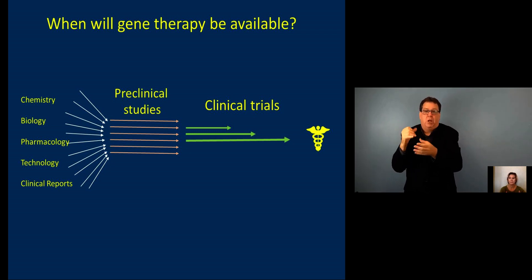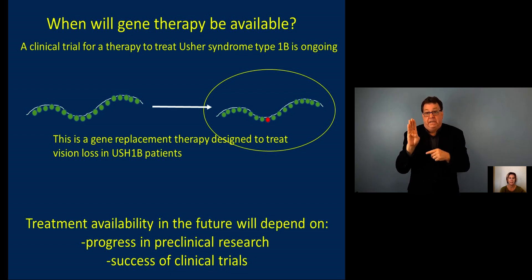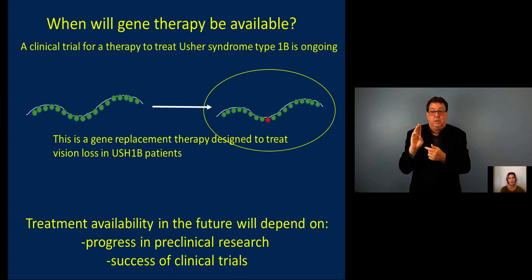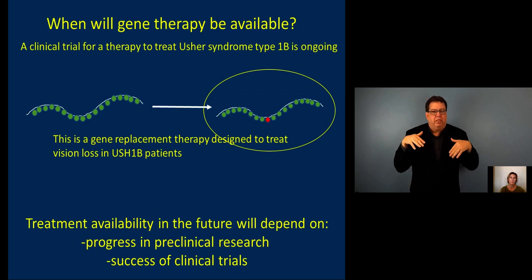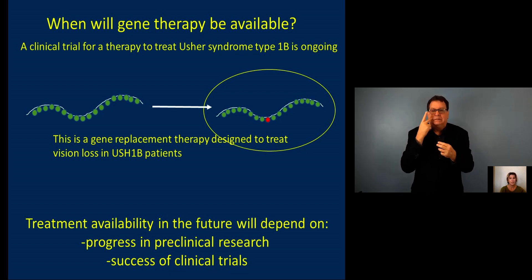Regarding Usher syndrome, there's currently one clinical trial underway — a gene therapy to treat Usher syndrome type 1b. The approach they're using is gene replacement therapy, designed to supply patients with a better copy of the Usher 1b gene than what they were born with. We don't know the outcome yet, so we don't know when it will be available for patients with Usher type 1b. Additionally, a lot of research is happening around the world exploring gene therapies of different types for virtually all the different kinds of Usher syndrome, though significant preclinical success will be needed before any of those advance to clinical trials.